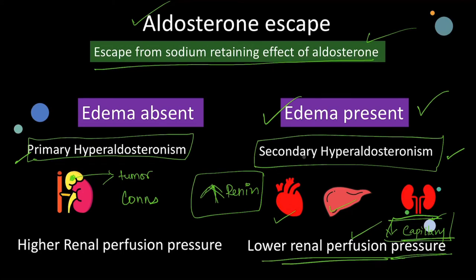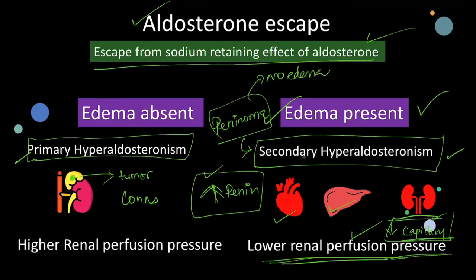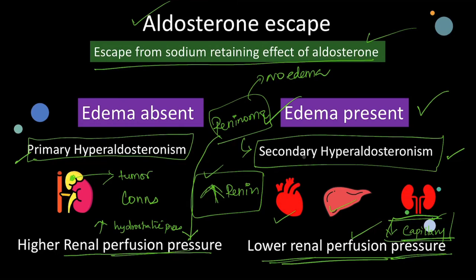However, not all secondary causes have a decreased perfusion pressure. For example, reninoma is a tumor which secretes renin — this is also a secondary cause for increased aldosterone levels. In this case there is no edema because there is hypertension and increased renal perfusion pressure, hence there is also increased capillary hydrostatic pressure, which prevents the reabsorption of sodium and thereby edema is also prevented. I hope you all now understand what aldosterone escape is and what the mechanism behind it is.